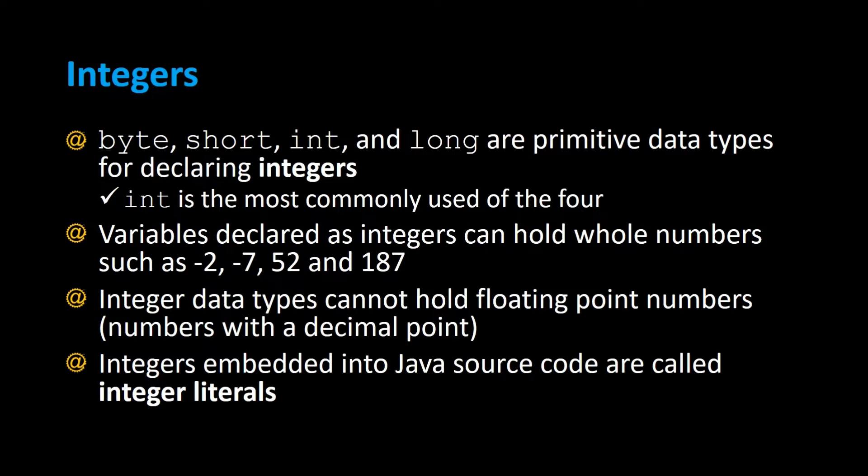Variables declared as integers can hold whole numbers only, such as negative 2, negative 7, 52, and 187. Integer data types cannot hold floating point numbers — that means numbers with a decimal point. It can only hold whole numbers or integers only. Integers embedded into the Java source code are called integer literals. Let's take a look at some examples.